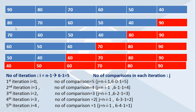In the second iteration, we perform comparisons only up to the second-to-last position, because the largest element is already in its exact position from the previous iteration. Similarly, in the next iteration, we compare and swap only up to the position before that. At the end of the second iteration, two largest elements — 80 and 90 — come in their exact positions. So in the third iteration, comparisons and swapping go only up to that position, and at the end of the third iteration, the three largest elements come to their exact positions.